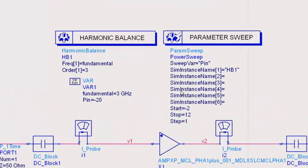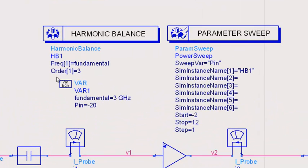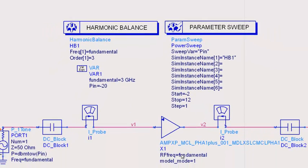We're picking three harmonics. We are going to simulate at a 3 gigahertz fundamental, which is also tied to this variable, which is tied to the RF frequency in the model.